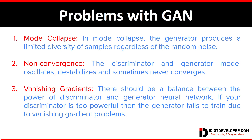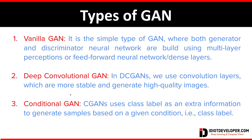Now we'll discuss some of the simple types of GAN that we will implement in future videos. First is Vanilla GAN — a simple type of GAN where both the generator and discriminator neural networks are built using the multi-layer perceptron, or feedforward neural network, also known as dense layers. Next is Deep Convolutional GAN (DCGAN), where we use convolutional layers which are more stable and generate higher quality images.